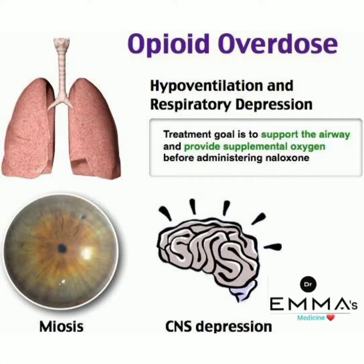In this video I am discussing opioid overdose. In opioid overdose, hypoventilation and respiratory depression occur. Remember, hypoventilation and respiratory depression are the key effects seen in opioid overdose.